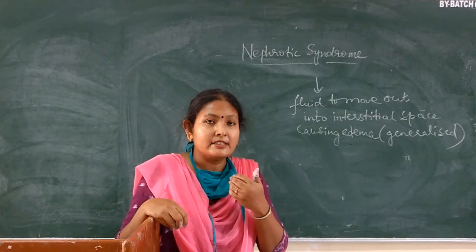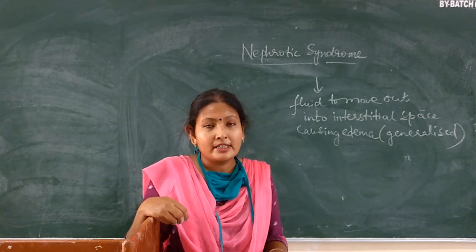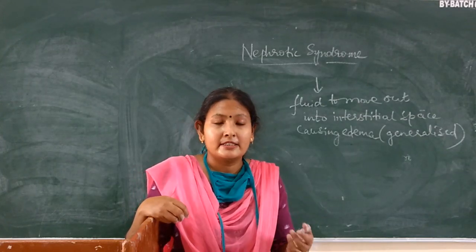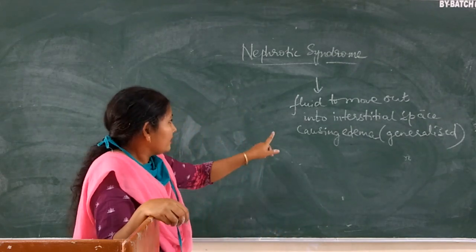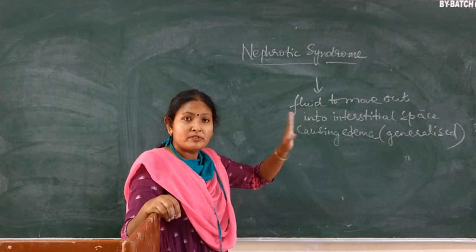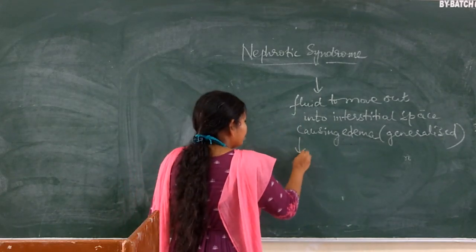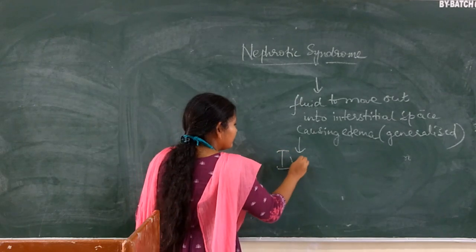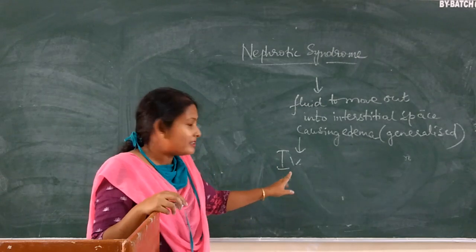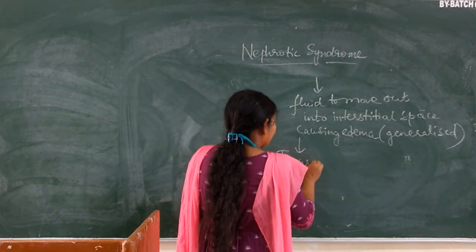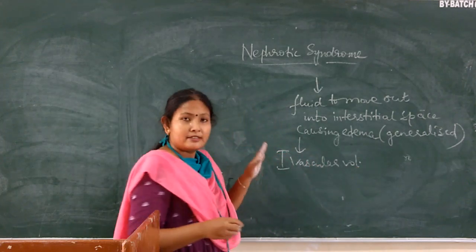Edema will be seen under the eyes, around the sacrum, in the abdomen — which is called ascites — in the ankles, and in the hands. Everywhere there will be edema. When the fluid moves out from the intravascular space, the intravascular volume is reduced. Here IV means intravascular — not intravenous.